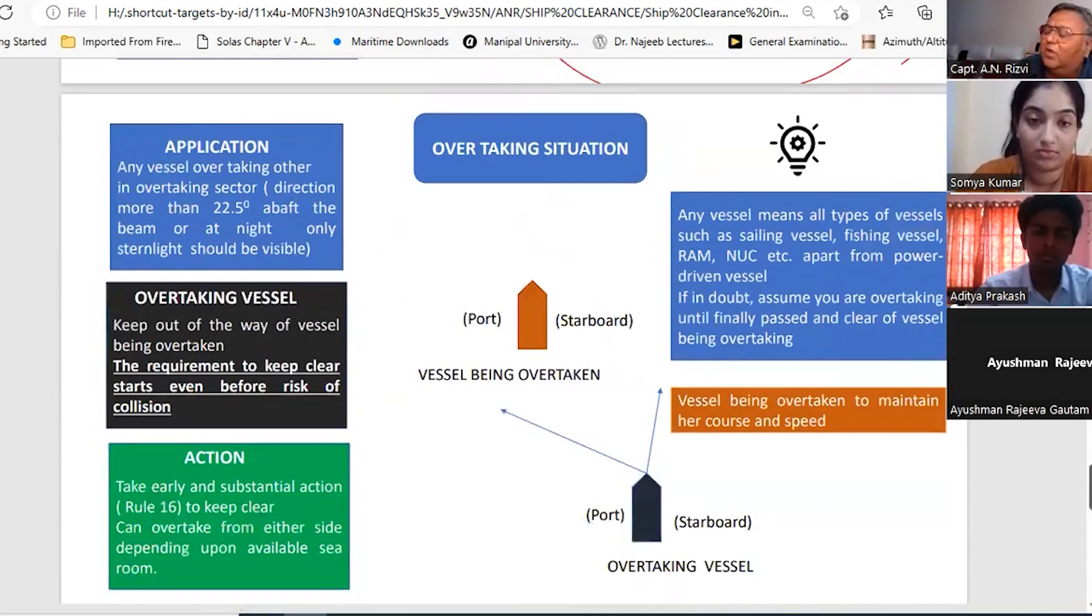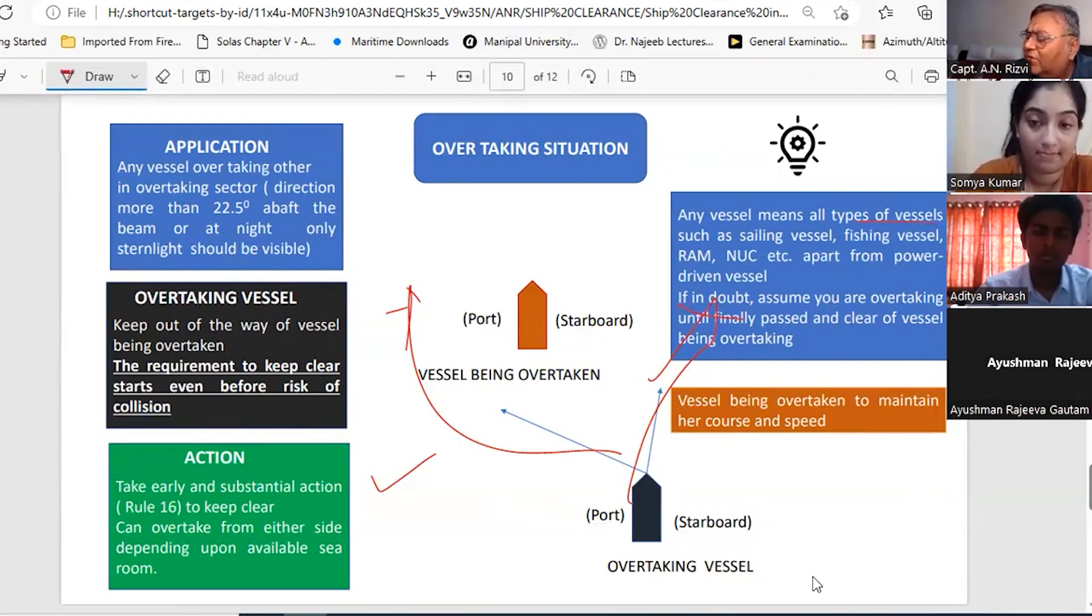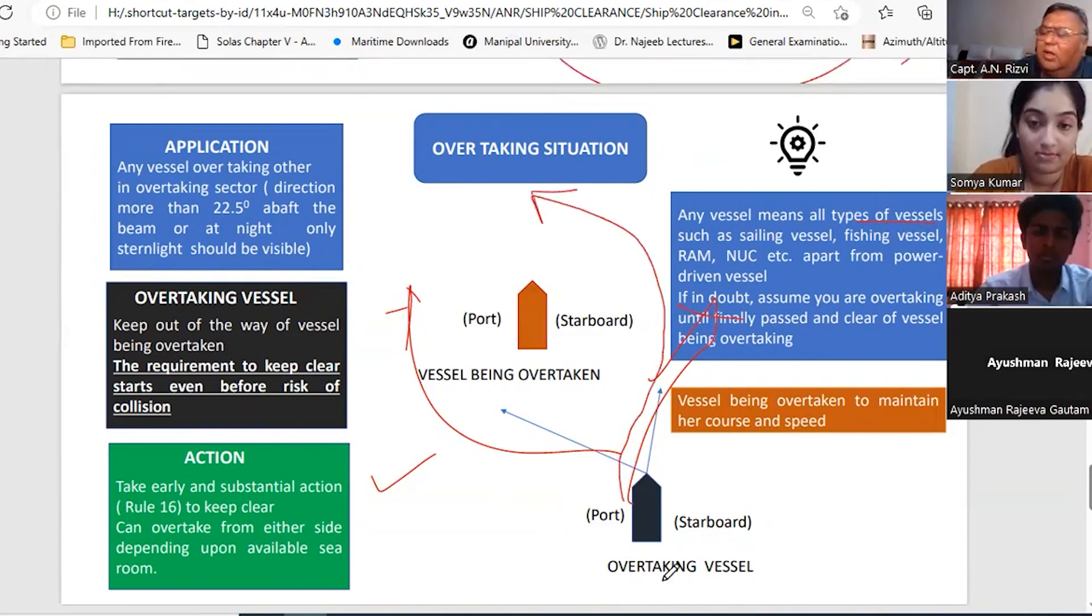Then we are having overtaking situation. Overtaking situation is not only about power-driven vessels. It means any vessel overtaking other has to keep out of the way. And this is the rule which starts even before risk of collision. You need to take early and substantial action. And you can overtake from either side. Any vessel means any type of vessel - fishing vessel, NUC, RAM, etc. Vessel being overtaken has to maintain course and speed. So once overtaking, always overtaking.